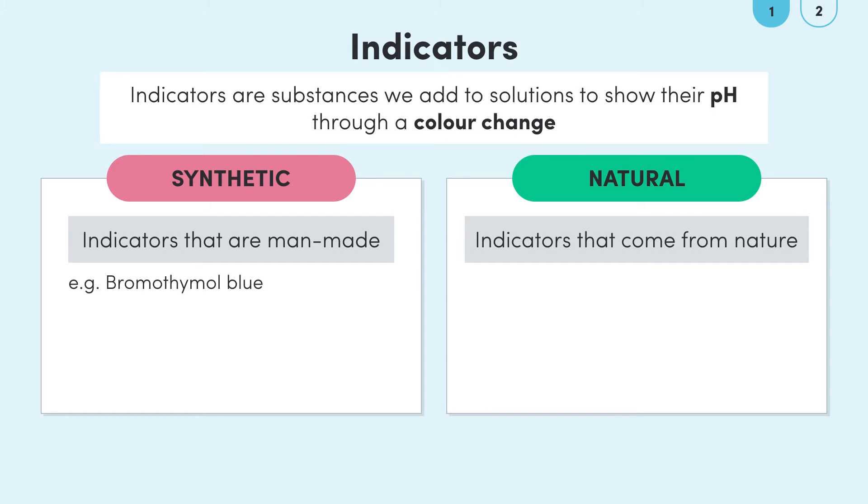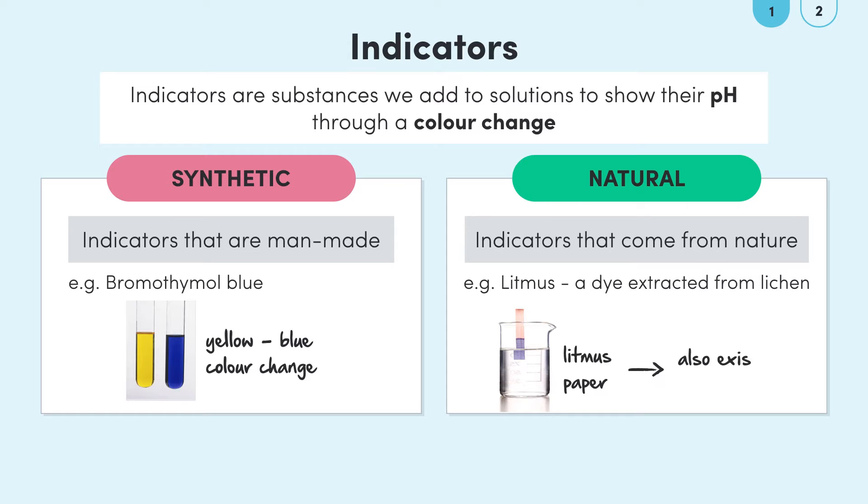Bromothymol blue is an example of a synthetic indicator that humans have made. On the other hand litmus is an example of a natural indicator. It's a purple dye obtained from lichen. You may have heard red and blue litmus paper but there's also a liquid form of litmus indicator that can be added to solutions as an indicator.